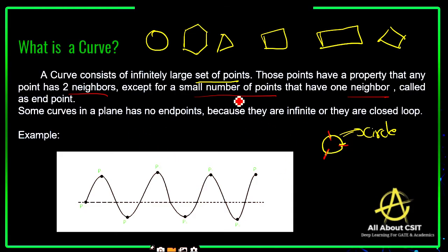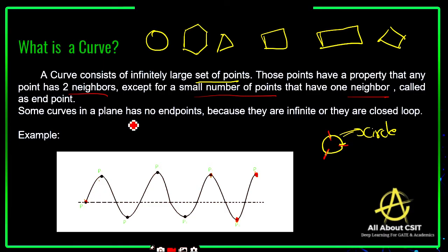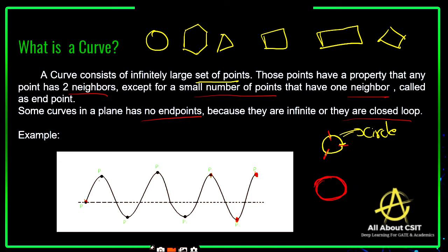Any point has two neighbors except for a small number of points that have only one neighbor — those are called end points. If you consider a small number of points with only one neighbor, that is the end point. Some curves in a plane have no end points because they are infinite or they are a closed loop. Just like a circle — there are no end points because it is a closed loop.